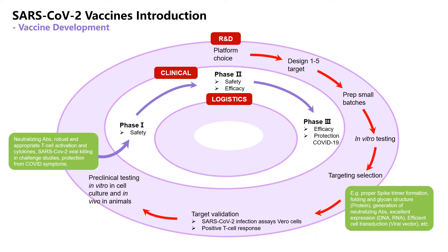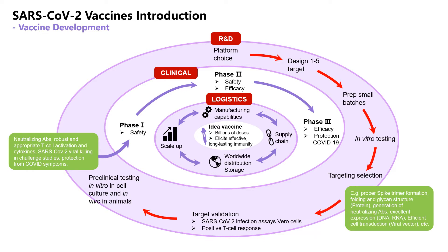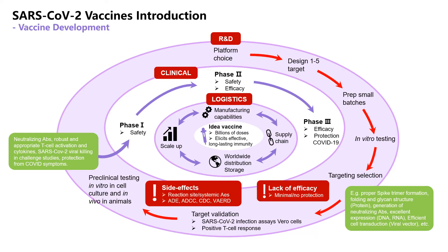If, and only when the vaccine shows safety and effectiveness among human volunteers, logistical actions such as manufacturing, supply chain distribution, storage, etc. will become a major obstacle. It is vital to ensure that vaccines are distributed globally in a coordinated and interconnected manner. Due to the various factors shown in the red box, candidate vaccines that have not obtained satisfactory results in clinical trials will be deleted from further development.